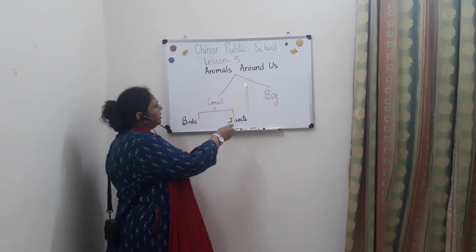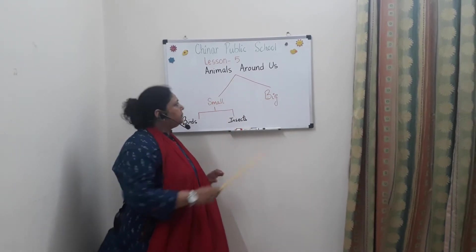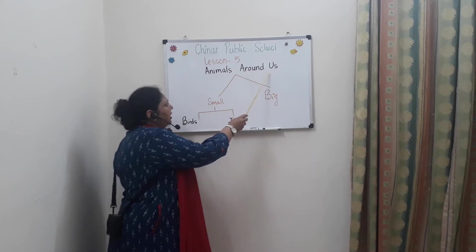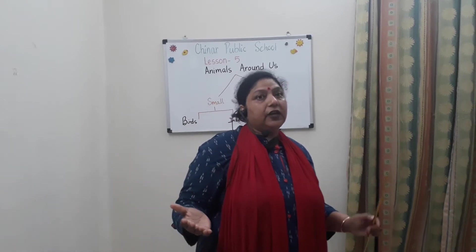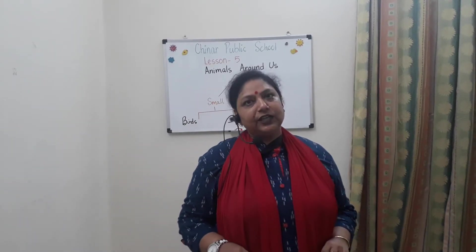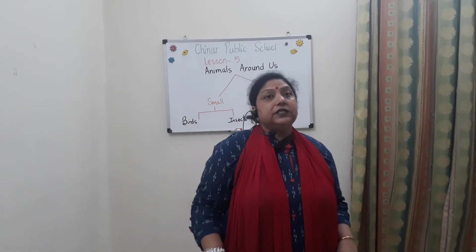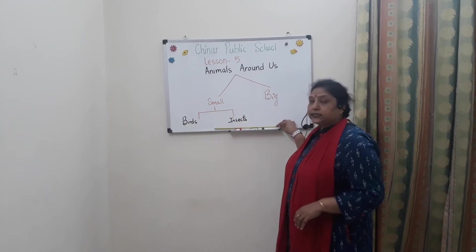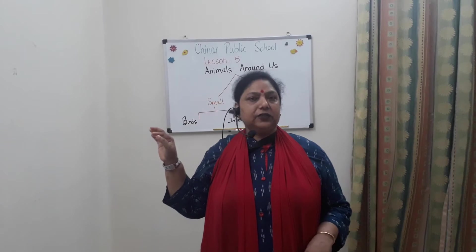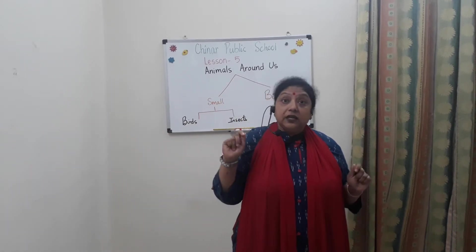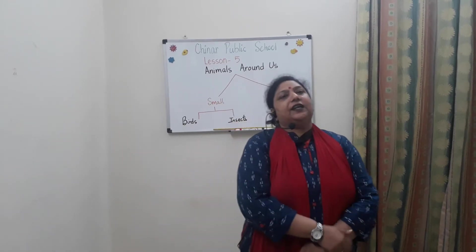Ma'am has written here: small and big. Means animals around us — jo bhi animals hamaare aas-paas hote hai, woh kuch bade hote hai aur kuch chhote hote hai. They are in different sizes and shapes. The animals which we see — like birds, insects, cows, buffaloes and many reptiles also — they all are animals. Even a small ant, woh bhi animal hai.